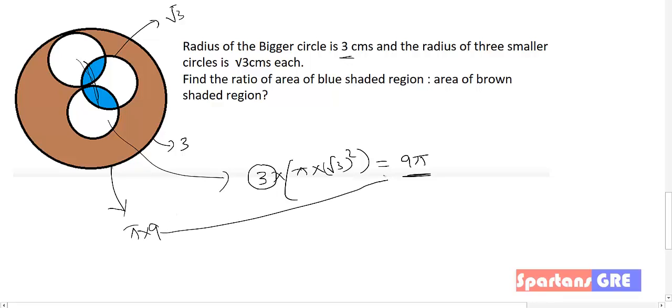So the sum of the areas of the 3 inner circles equals the area of the outer circle — both are 9π. That means the sum of the areas of all 3 smaller circles equals the bigger circle's area.